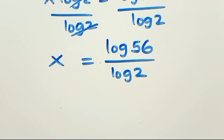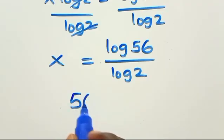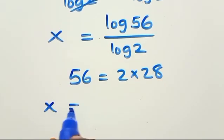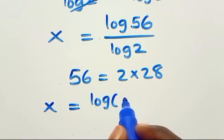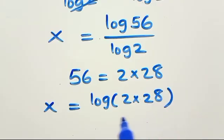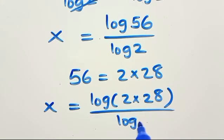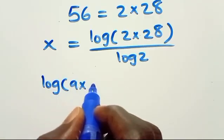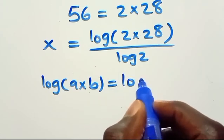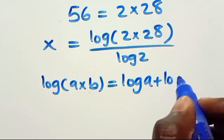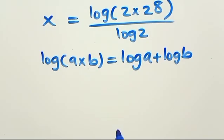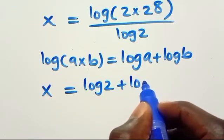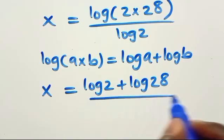We can write 56 as the product of 2 times 28. So we have x equals log(2 times 28) over log 2. Recalling that log(a times b) equals log a plus log b, this becomes x equals log 2 plus log 28, all over log 2.